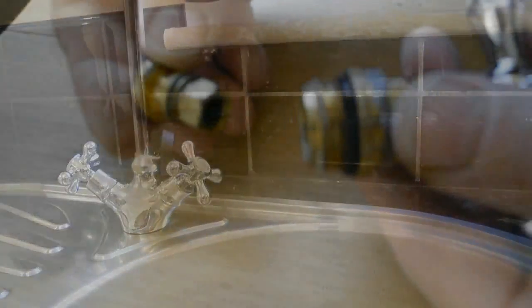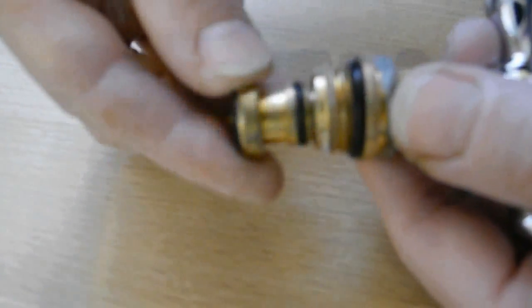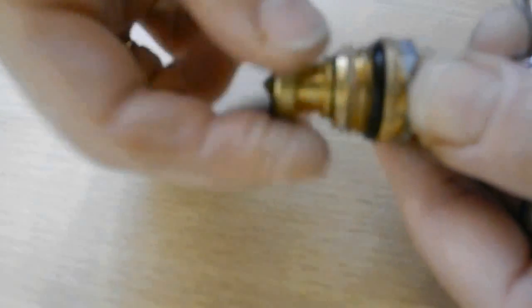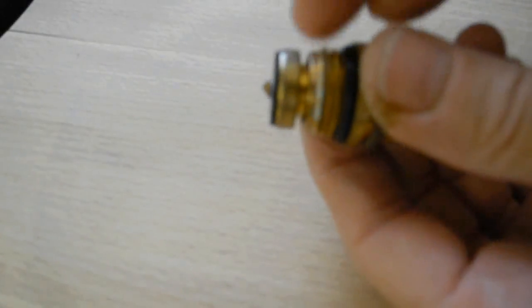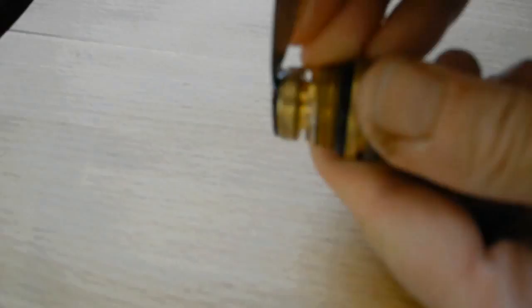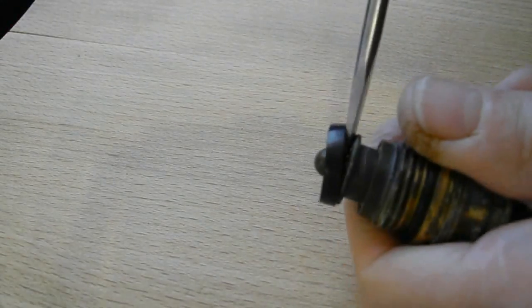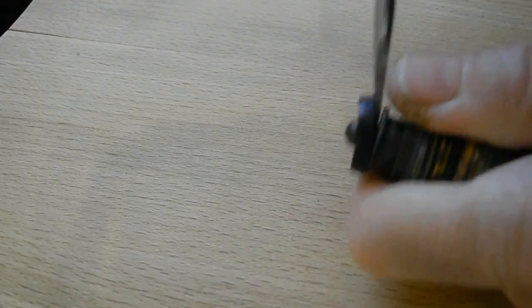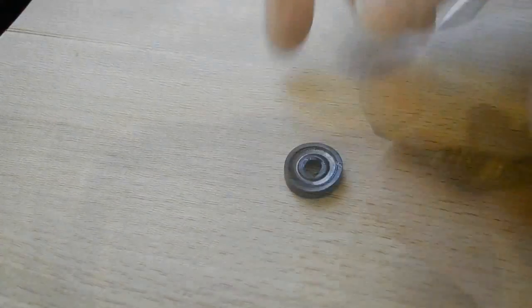Now, this is the internal cartridge of the water tap. It consists of two parts: one is the jumper valve which closes the water, and it has a washer. This is a replaceable washer, and you could remove it using any tools and replace it.